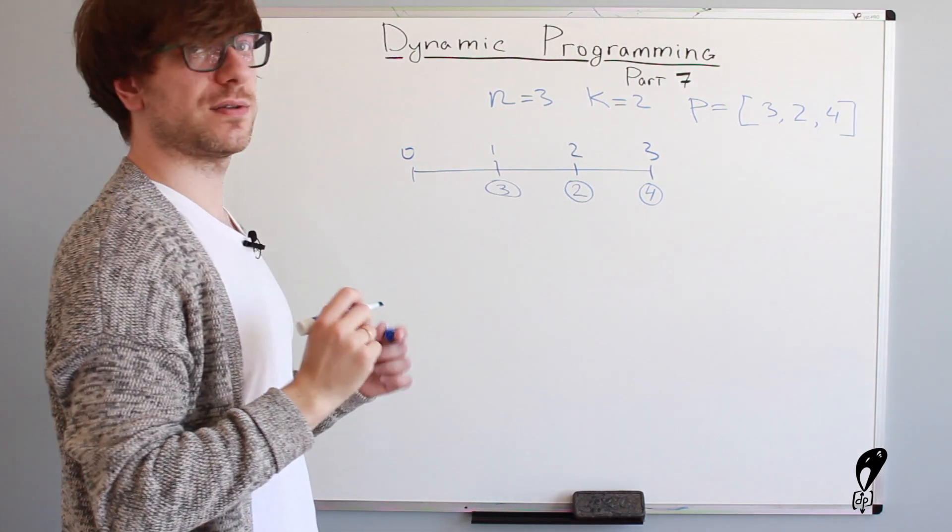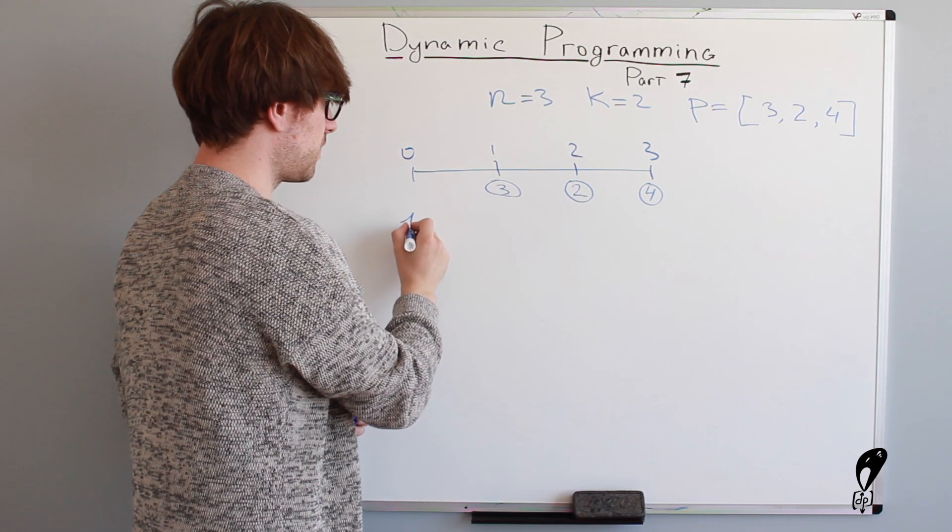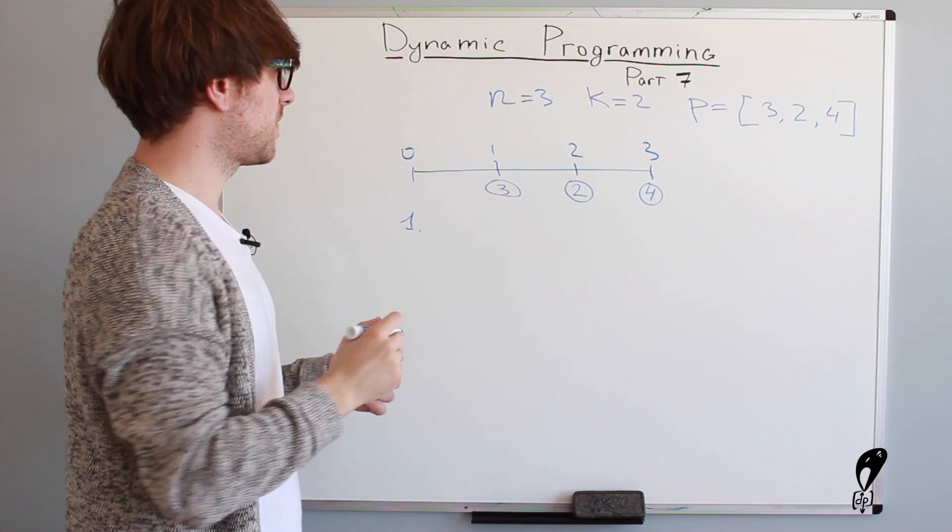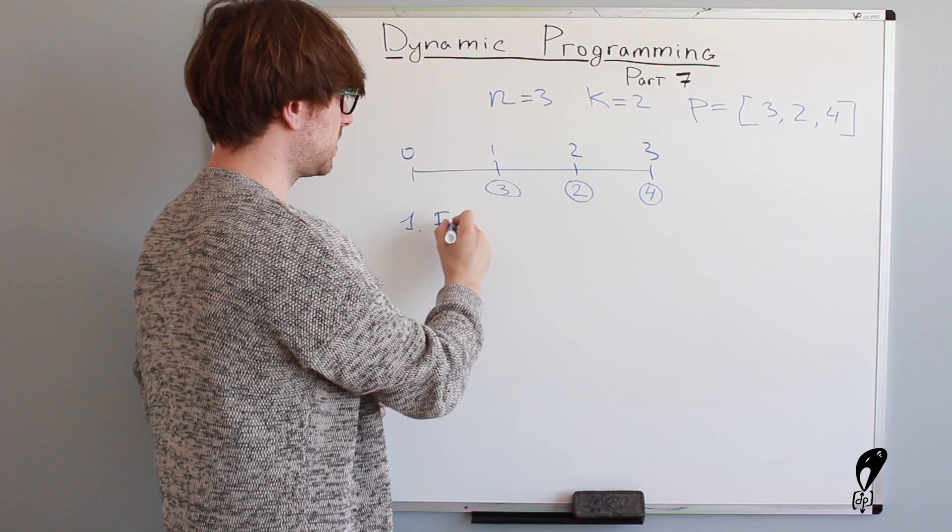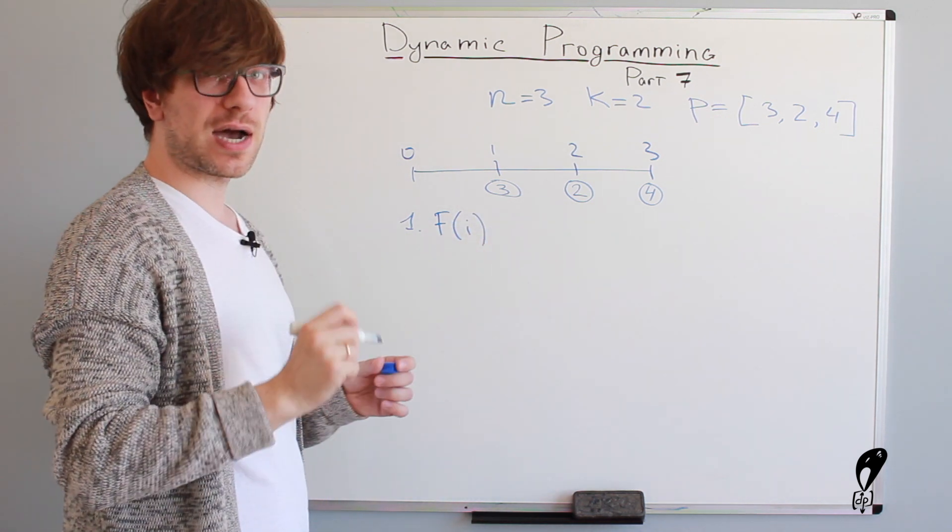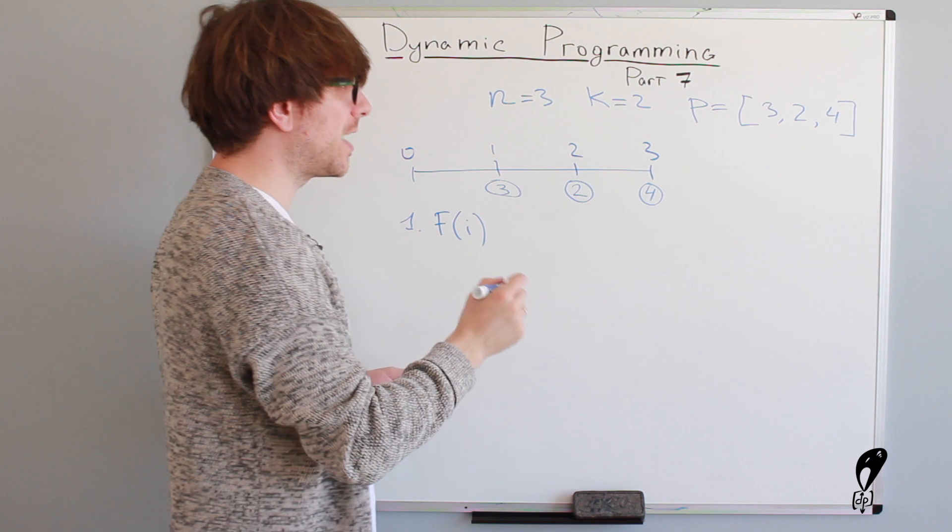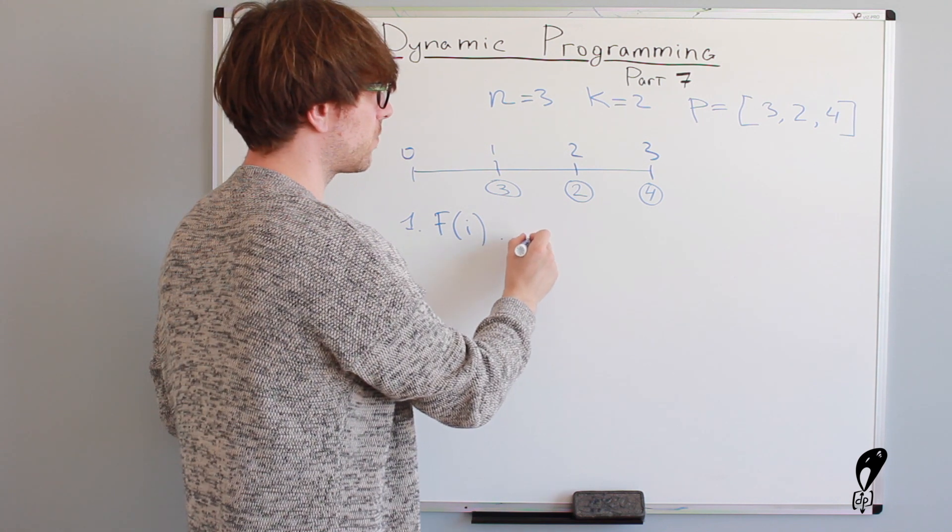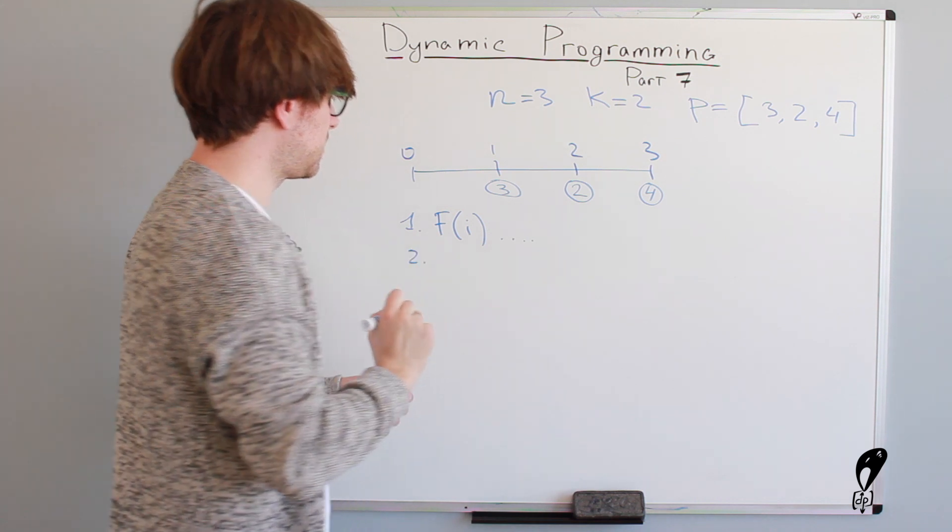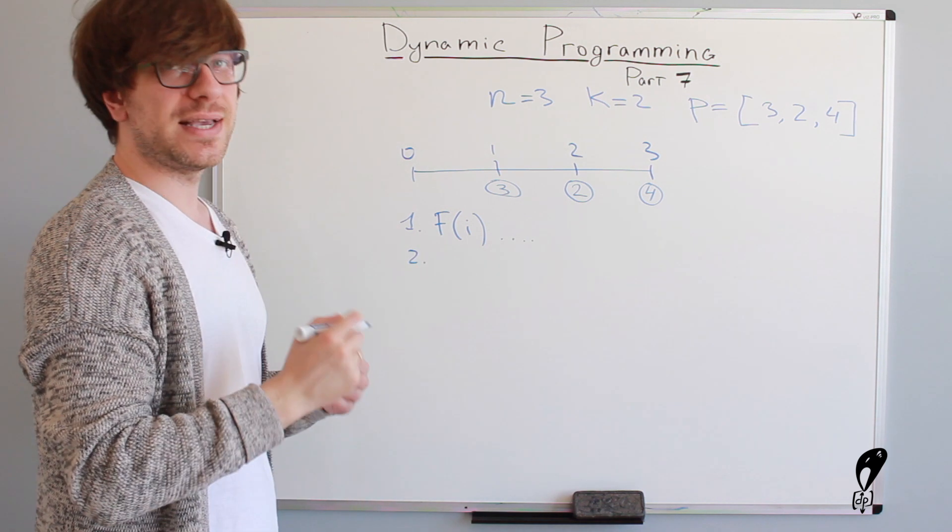Awesome. So let's use the framework to solve this problem. The first thing we got to do here is write down the objective function. So the objective function is f of i is the minimum cost to get to the i-th stair. I'm not going to write it, but that's what it is.